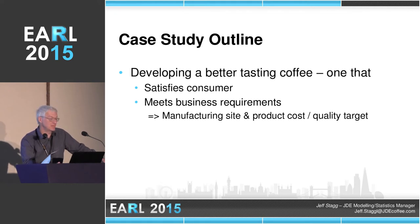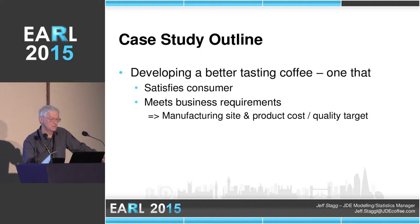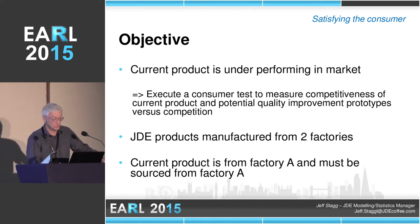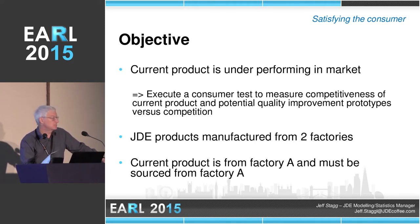That means manufactured out of the right site to the right cost and quality targets that we set for it. The objective of the first part is satisfying the consumer, and it's where I'll demonstrate the Constrained Dual Scaling application. We're going to run a consumer test to measure the effectiveness of our product versus key competitors and potential quality improvement prototypes.